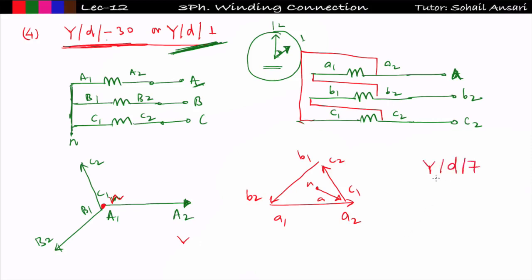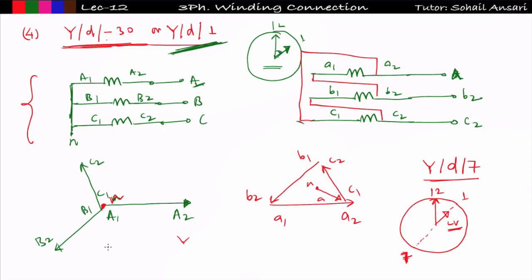Now I have to make YD7. In YD1, the HV side is fixed at 12 and the LV side is at 1. YD7 is just opposite to YD1 — I need to rotate this LV winding by 180 degrees to get YD7. So I will leave the primary winding phasor diagram the same as in YD1, but change the orientation of the LV winding by 180 degrees to shift it from position 1 to position 7.